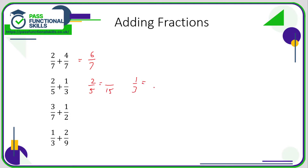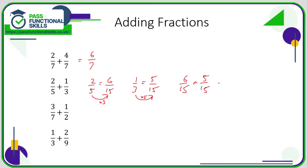So I'm going to convert both fractions into fifteenths. Two fifths: five times three is fifteen, so times the top by three — that's six fifteenths. One third: three times five is fifteen, so times the top by five — that's five fifteenths. The question is now six fifteenths plus five fifteenths, and six plus five is eleven, so the answer is eleven fifteenths.